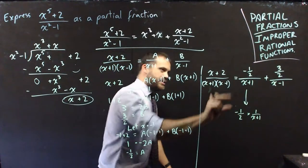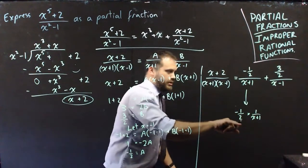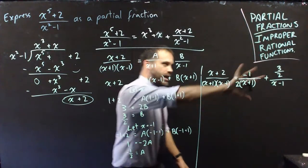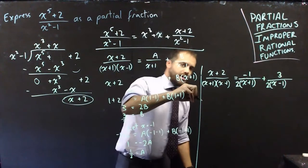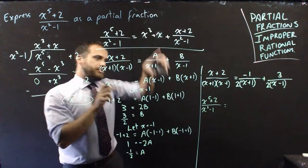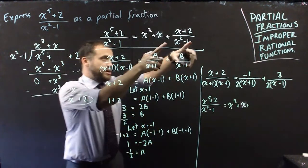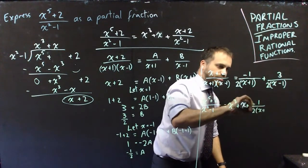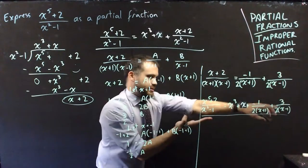Negative 1 half over x plus 1 is the same as negative 1 half times 1 over x plus 1, which is clearly negative 1 over 2 times x plus 1. We can write it neater: negative 1 stays on top and that 2 moves to the bottom. The same trick applies to 3 over 2 divided by x minus 1. So our final answer is: x to the 5 plus 2 over x squared minus 1 equals x cubed plus 3, minus 1 over 2(x plus 1), plus 3 over 2(x minus 1).